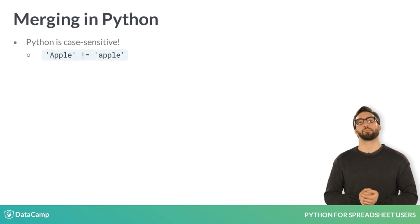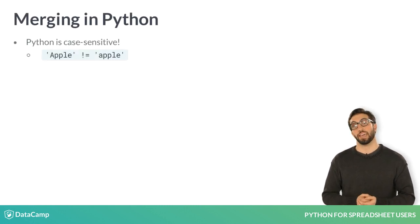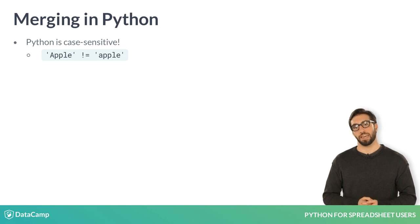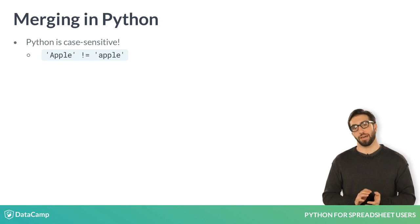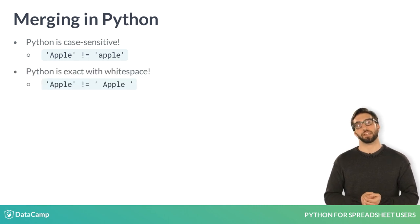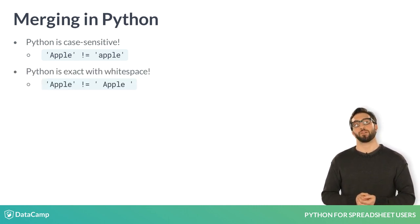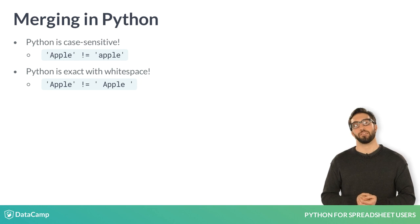First, Python is case-sensitive, so capital A apple is not the same as lowercase a apple. The corresponding columns must be exact matches, otherwise the join won't work as expected. Second, it's common to make sure leading and trailing spaces don't negatively affect our join as well.